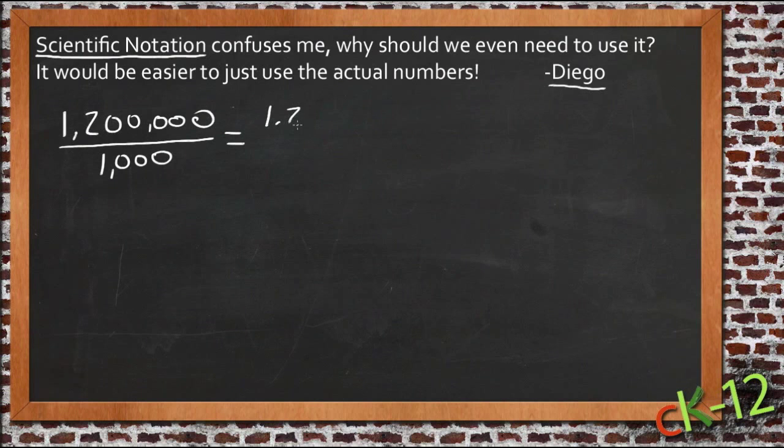And you could write that as 1.2 times 10 to the 6th over 1 times 10 to the 3rd. And then you can use scientific notation to solve it. And you take a look at this and you think, well this looks confusing. This really isn't that hard. I could just cancel the zeros, and I get 1,200 divided by 1, or just 1,200, and I'm done.